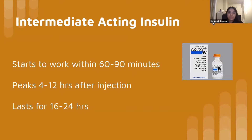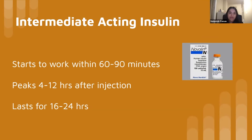Moving on to intermediate acting insulin — it's another class of medicine used to control blood sugar in people with type 1 and type 2 diabetes. Intermediate acting insulin is often referred to as a background or basal insulin, and can often appear cloudy in nature, thus needing to be mixed well. This is because it contains a buffer that makes it work over a long time, resulting in that cloudy appearance.